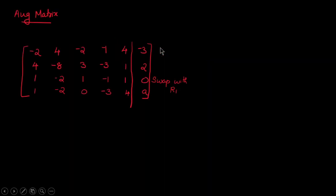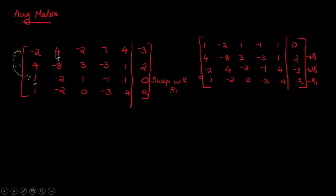The first row represents the first equation, the second row represents the second equation, and so on. After this line we have the right-hand side of our equations, and we have to reduce it into row echelon form. First, I swap the first row and the third row, since we have a 1 there. Swapping R1 and R3 gives us a 1 at the first position.